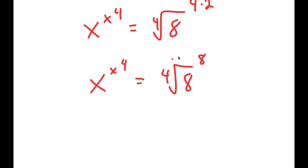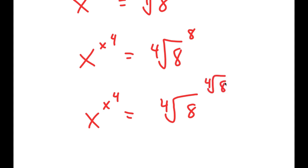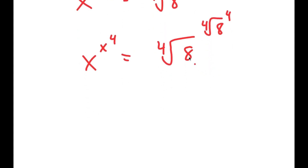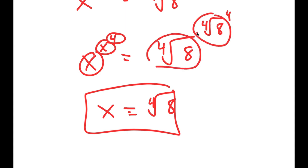That is the same as the fourth root of 8 to the power of the fourth root of 8 to the power of 4, since the fourth root of 8 to the power of 4 is just 8. This means x equals the fourth root of 8, because the equation is in the form x^(x^4) and x here is the fourth root of 8.